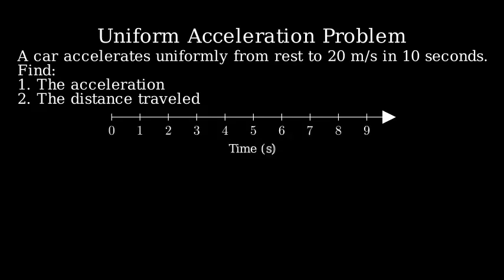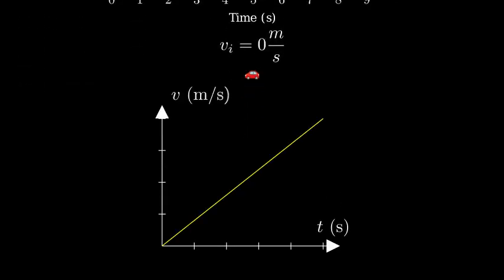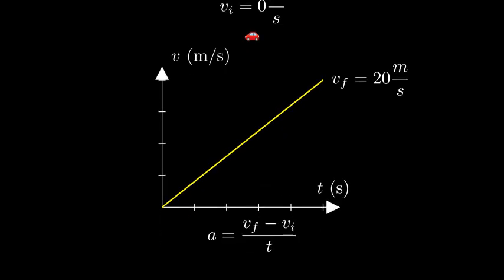Let's visualize this situation. We have a car starting from rest, meaning its initial velocity is zero, and it accelerates uniformly until it reaches 20 meters per second after 10 seconds. To find the acceleration, we'll use the formula: acceleration equals final velocity minus initial velocity divided by time.